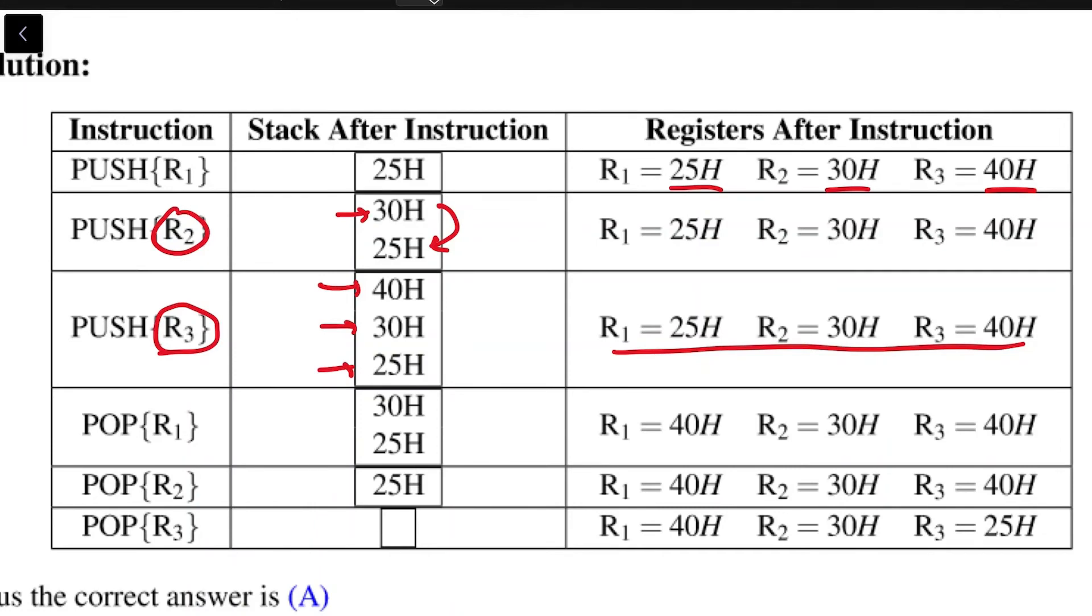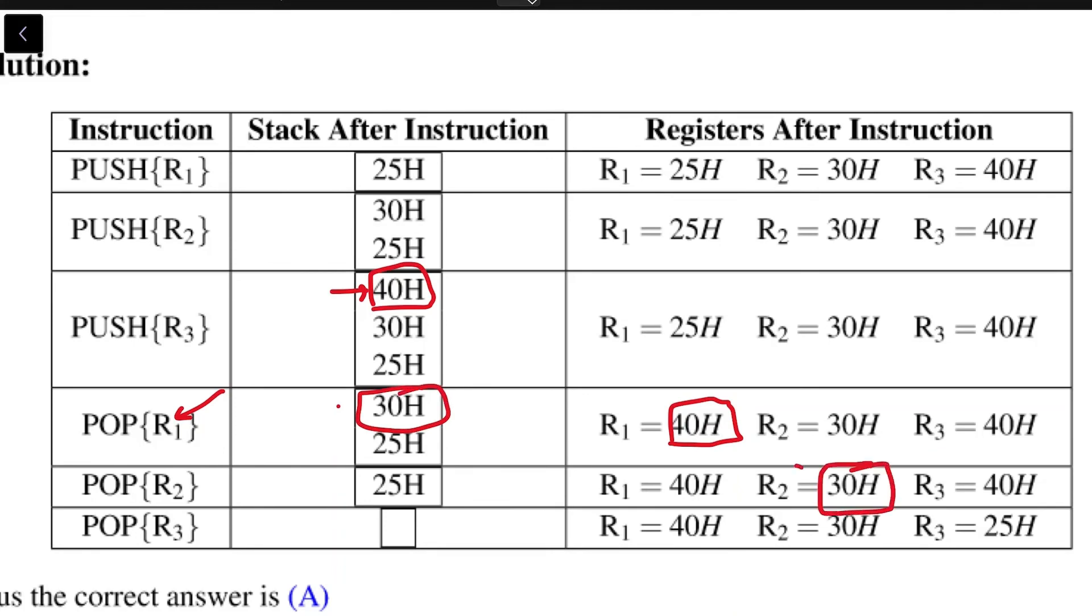Now popping means to pop the top element and place it in this register. So pop r1 will override r1 with 40h, pop r2 means 30h gets overwritten onto r2, and finally pop r3 will override r3 with the value 25h.